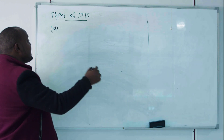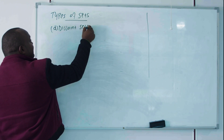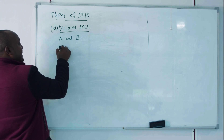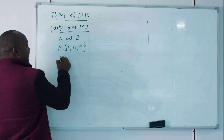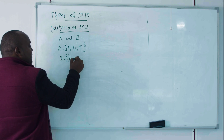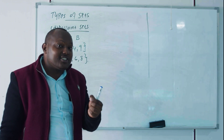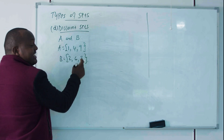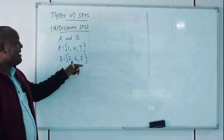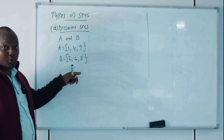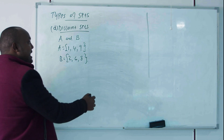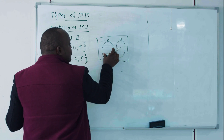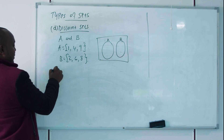The fourth type of set is disjoint sets. Assume you have two sets: set A = {1, 4, 9} and set B = {2, 6, 8}. Two sets are said to be disjoint if they have no common elements. As you can see, {1, 4, 9} and {2, 6, 8} share no elements. In a Venn diagram, disjoint sets A and B appear as two separate circles with nothing in common.